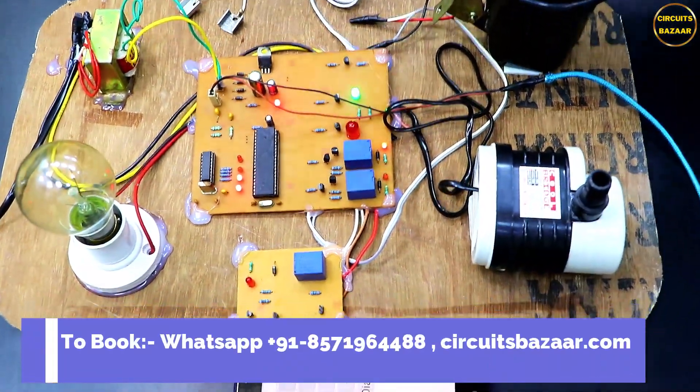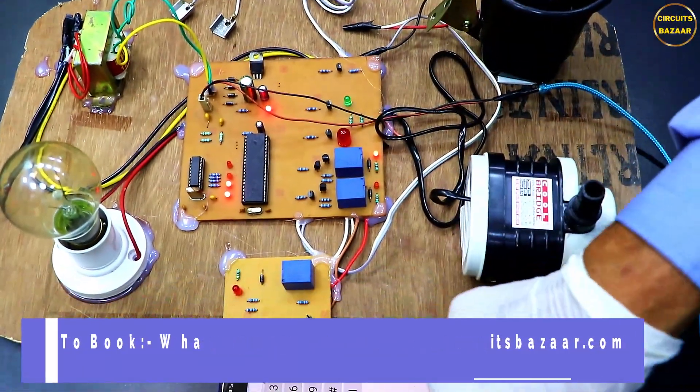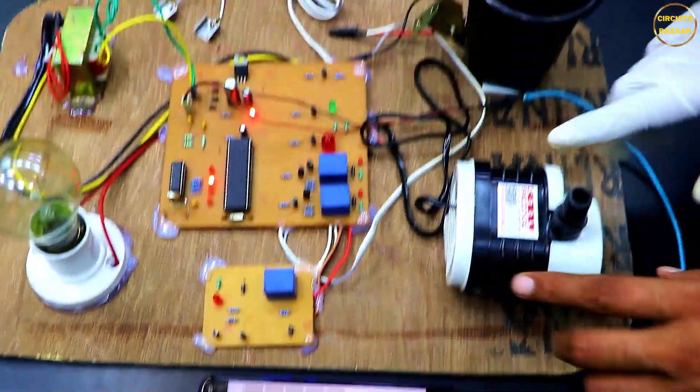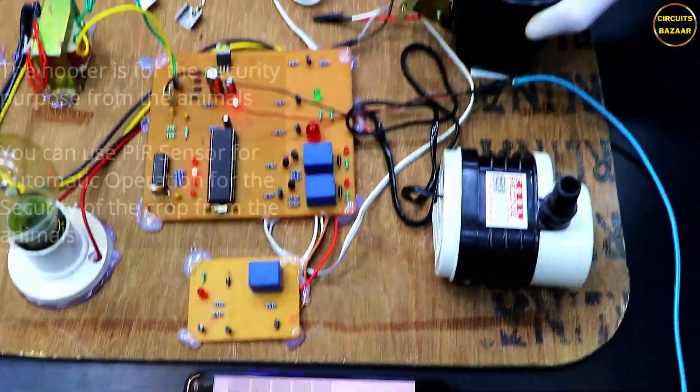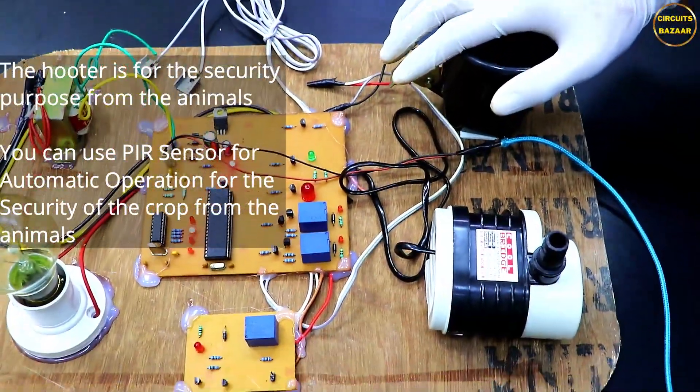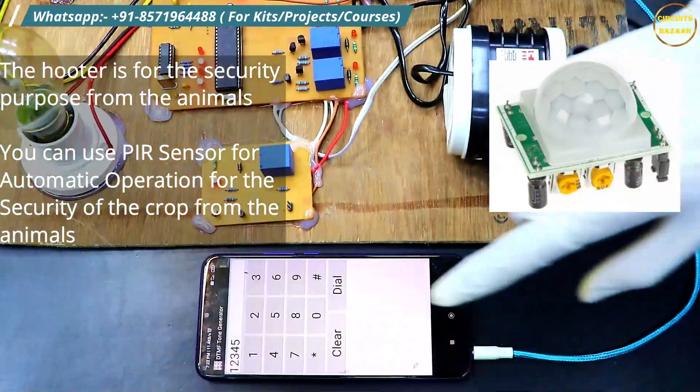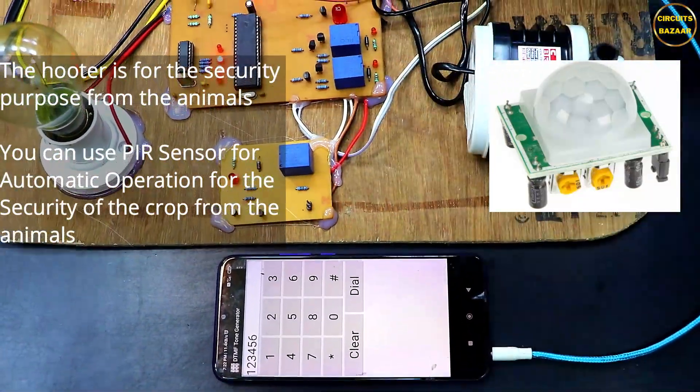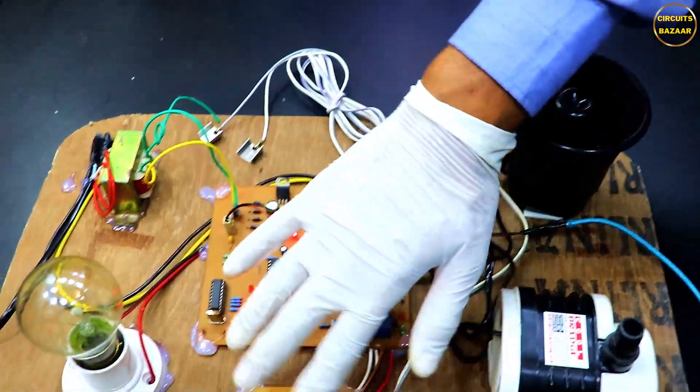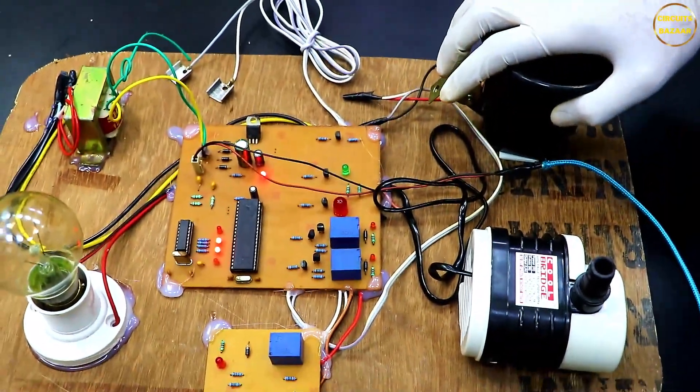By pressing four you can turn off this motor. Now the motor is off. By pressing five you can control this hooter. If I press six, this hooter would be off.